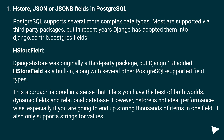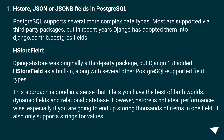JSON or HStore fields in PostgreSQL: PostgreSQL supports several more complex data types. Most are supported via third-party packages, but in recent years Django has adopted them into django.contrib.postgres.fields. HStore field: Django HStore was originally a third-party package, but Django 1.8 added HStore field as a built-in, along with several other PostgreSQL-supported field types.